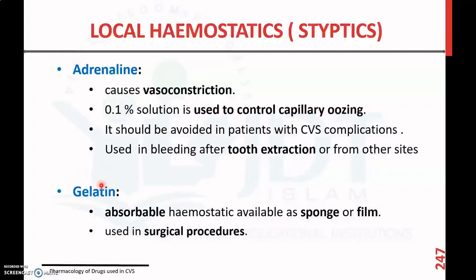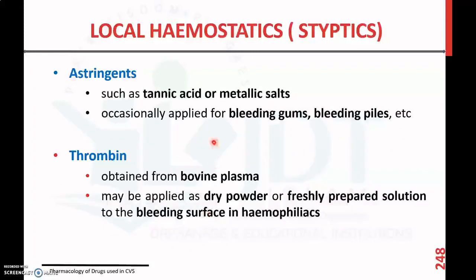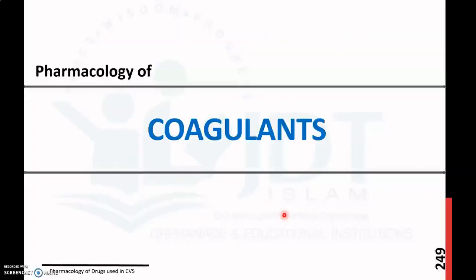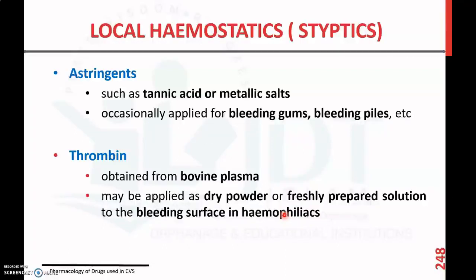Another local hemostatic agent is gelatin, which is an absorbable hemostatic available as a sponge or film, used in surgical procedures. Astringents such as tannic acid and metallic salts are occasionally applied on bleeding gums as well as bleeding piles. Thrombin is obtained from bovine plasma and can be applied as dry powder or freshly prepared solution to a bleeding surface, especially in cases of hemophilia.